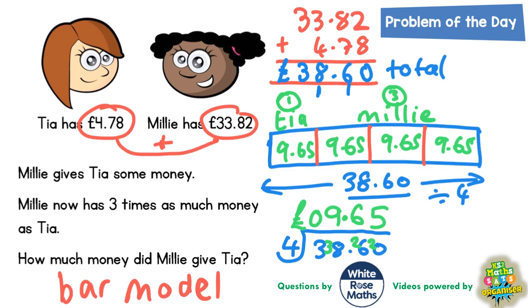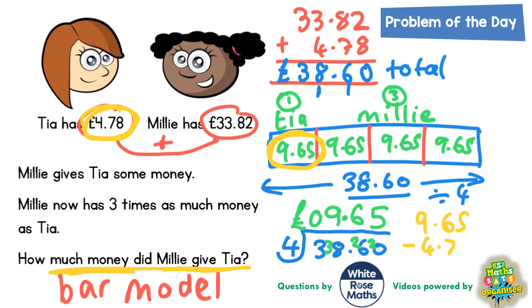The final question asks how much money did Millie give to Tia. We now know that Tia has £9.65, but she started with £4.78. So if we find the difference between those two — £9.65 take away £4.78 — whatever the difference is, it must be the extra amount that Millie gave to Tia, which is what we're trying to find.